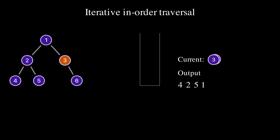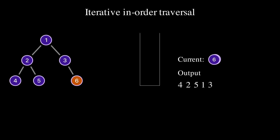Current is not null. We push node 3 to the stack and set the current to null because node 3 doesn't have a left child. Current is null. We pop node 3 from the stack, print 3 to the output, and set current to node 6. Current is not null. We push node 6 to the stack and set the current to null because node 6 doesn't have a left child. Since the current is null, we pop node 6 from the stack, print 6 to the output, and set current to null because node 6 doesn't have a right child.